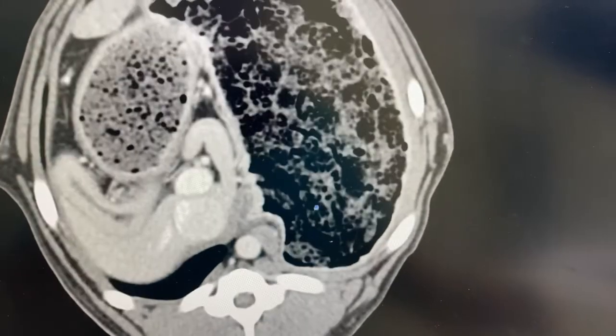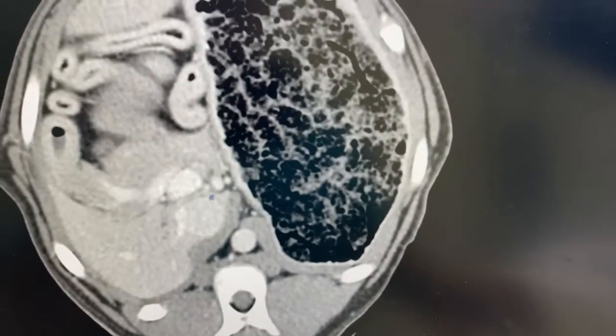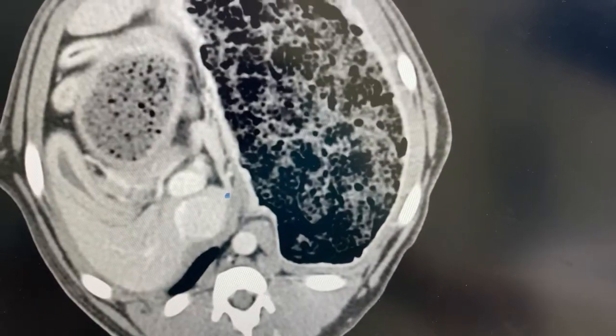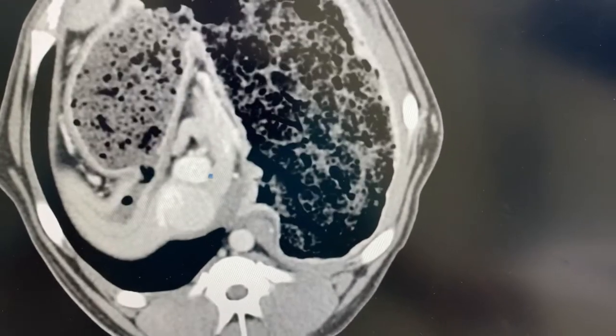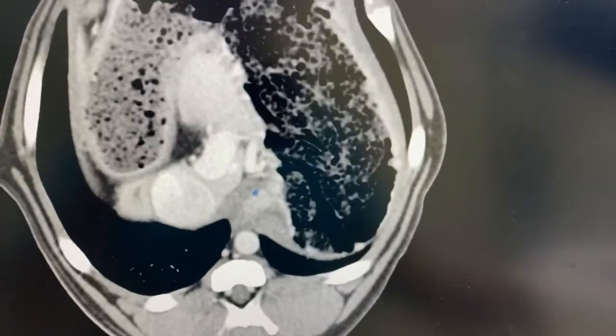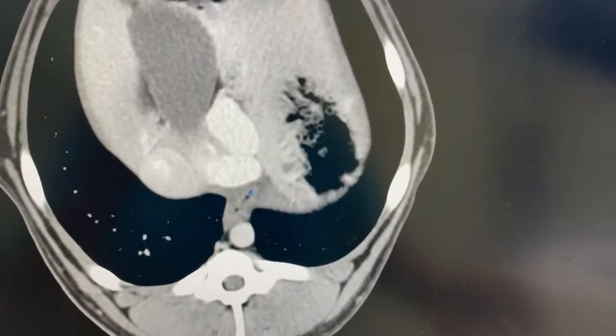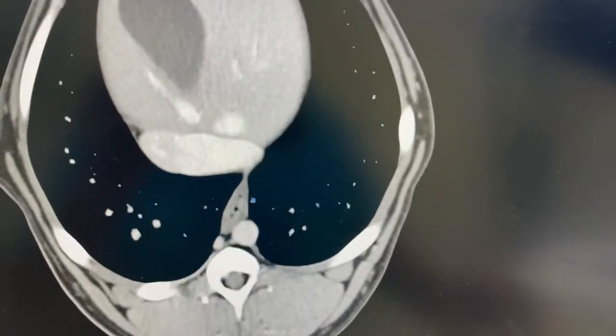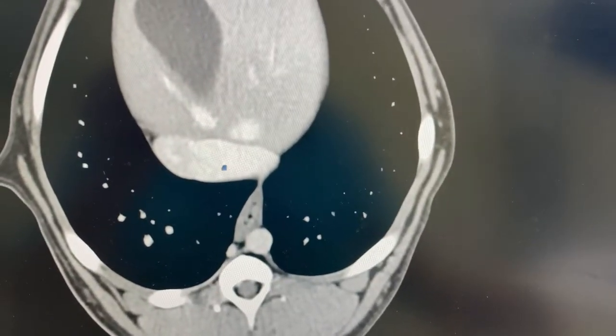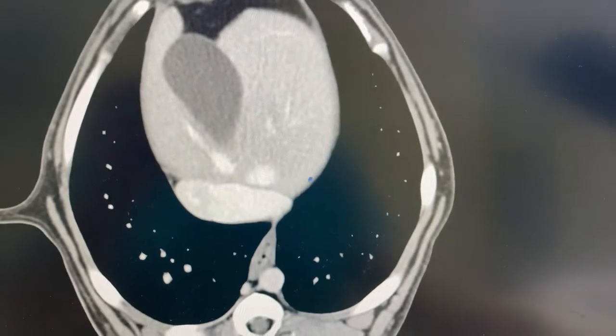That's the caudal vena cava there. So heading back, portal vein. I'm going to head back cranially again and just trace that portal vein right there as it loops around and then comes into the left side of the vena cava. So really big intrahepatic shunt sitting right there.